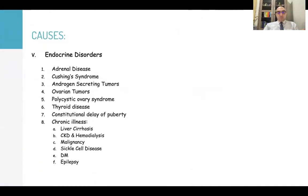Other endocrine causes include adrenal disease, Cushing's syndrome, androgen-secreting tumors, ovarian tumors, polycystic ovary syndrome, thyroid disease — either hypofunction or hyperfunction — constitutional delay of puberty, and chronic illnesses like liver cirrhosis, chronic kidney disease on hemodialysis, malignancies, sickle cell disease, diabetes mellitus, and epilepsy.